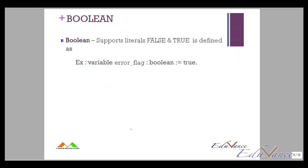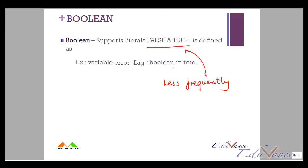Boolean, on the other hand, has two values: true and false. So again, it is close to a programming language. Boolean is less frequently used, but nonetheless it is used — if you have two states which are true and false, then you would use the type Boolean.